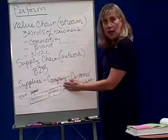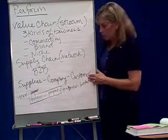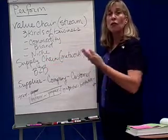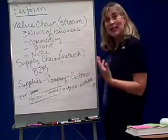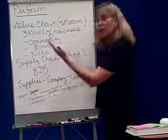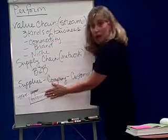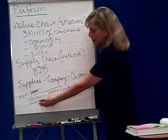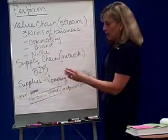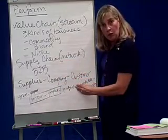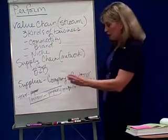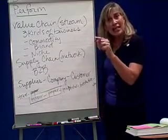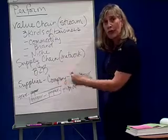We have a supplier, we have the company, and we have the consumer or the customer. For example, looking at trees in the forest versus your textbook — this would be a typical supply chain. We'd start with the trees in the forest, which are harvested by the timber company. The paper company then buys the timber and makes paper. Paper is then sold to the publisher. The publisher produces textbooks, which are sold to the bookstore, which are then sold to you. There are a lot of touches along the way from tree to textbook.